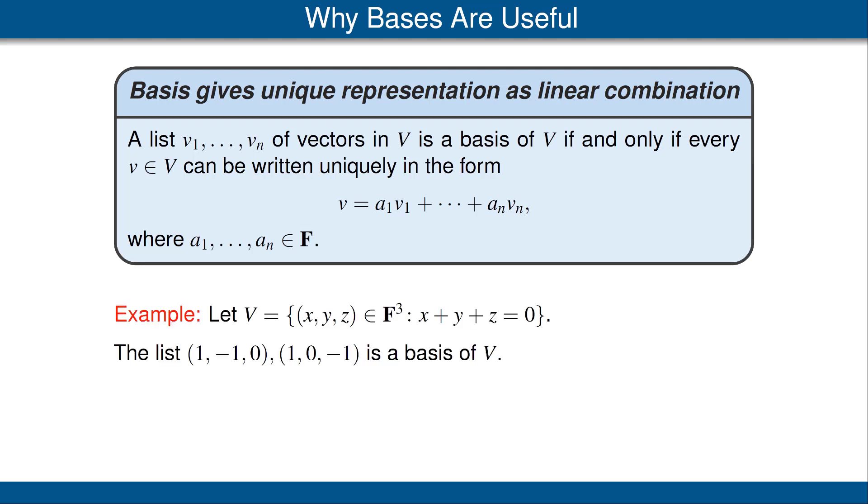Let's look at an example. Let V be the vector space we encountered earlier, namely the subspace of F³ consisting of those vectors whose three coordinates add up to zero. We claim that the list (1,-1,0) first vector, and then the second vector is (1,0,-1), is a basis of V. Let's think about why.